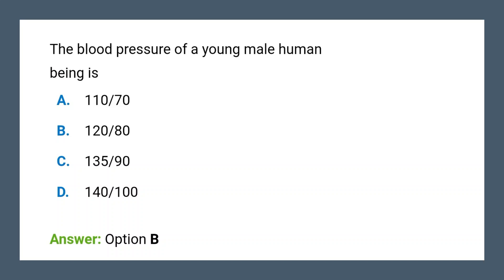Next question: The blood pressure of a young male human is represented by which number? The blood pressure of a young male human is represented by option B — 120 by 80.